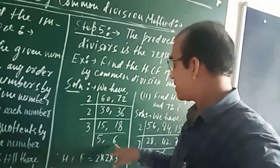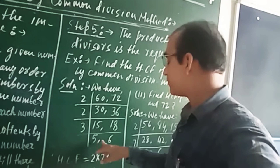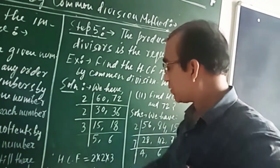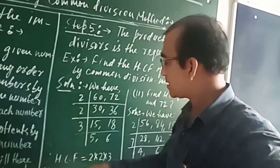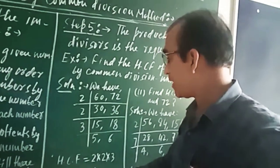Now 5 and 6 have no common factor between them. So we will stop the division process here. Our HCF will be the product of common divisors: 2 times 2 times 3, which will be 12.